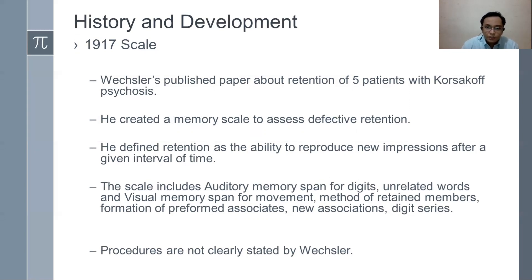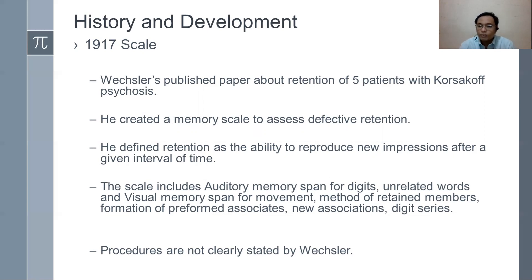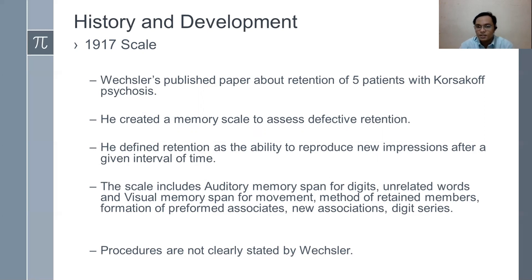The 1917 scale includes auditory memory spans for digits, unrelated words, and visual memory spans for movement. There is also a method of retained members, formation of preformed associations, new associations, and digit series.